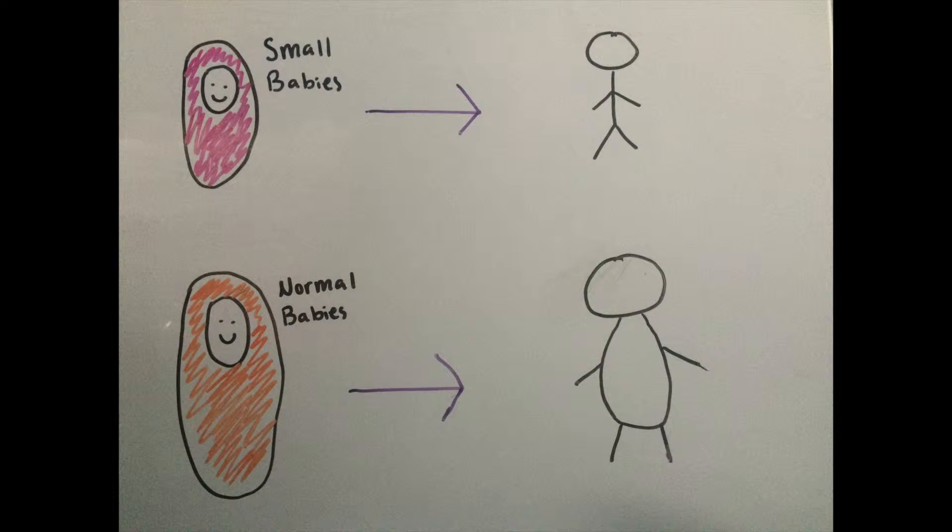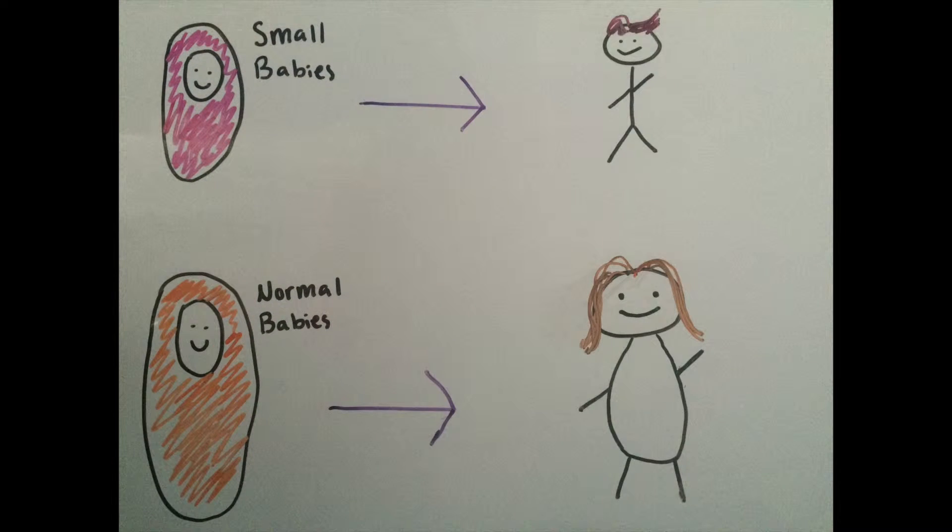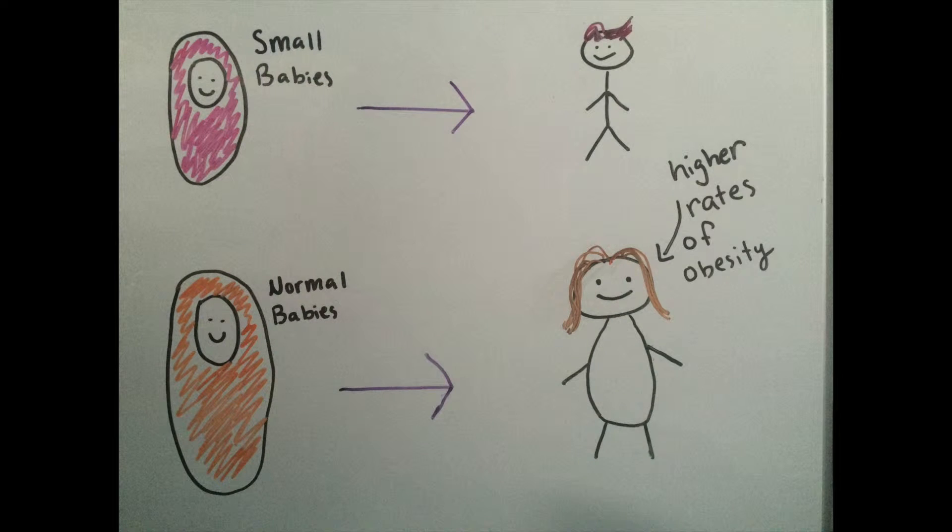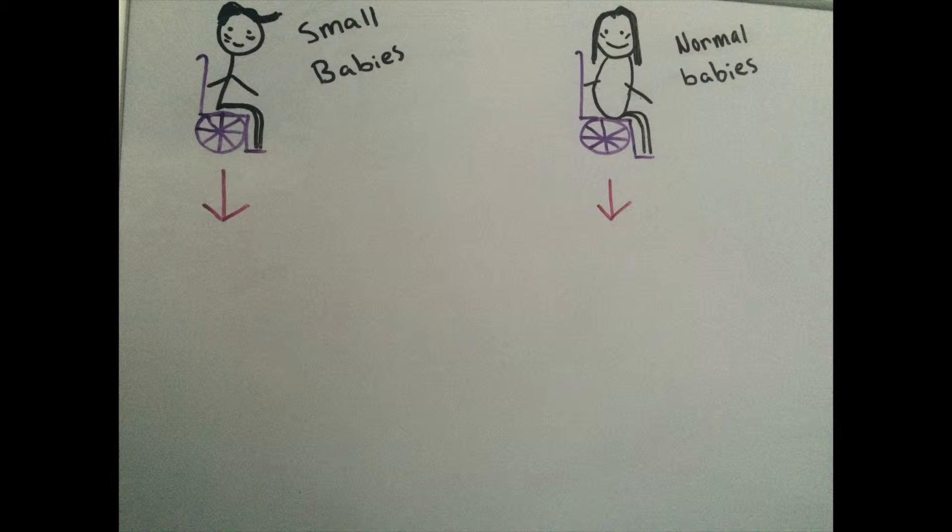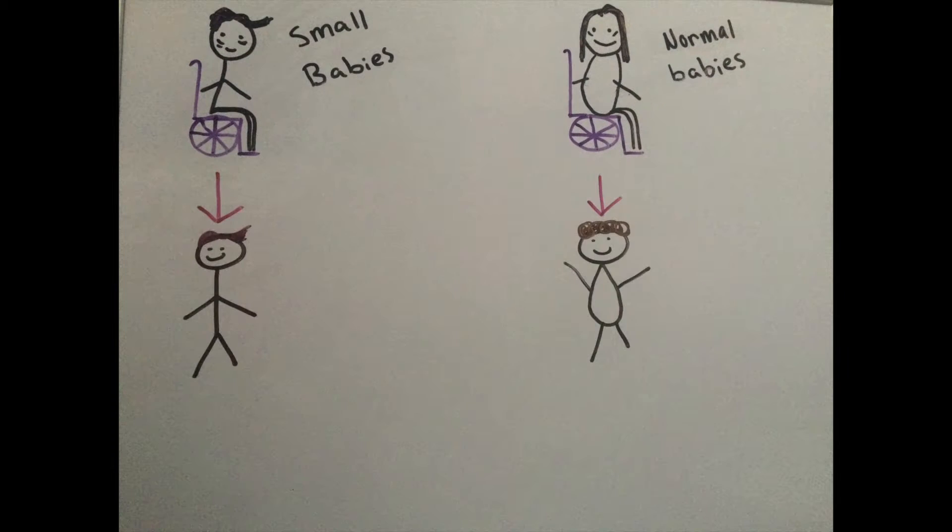What was remarkable was that small babies stayed small throughout their lifetime with a lower rate of obesity than the normal population. Normal weight babies had a higher rate of obesity than the normal population. Even more amazing is the fact that these traits were passed on. The descendants of the small babies, including their children and grandchildren, stayed small.